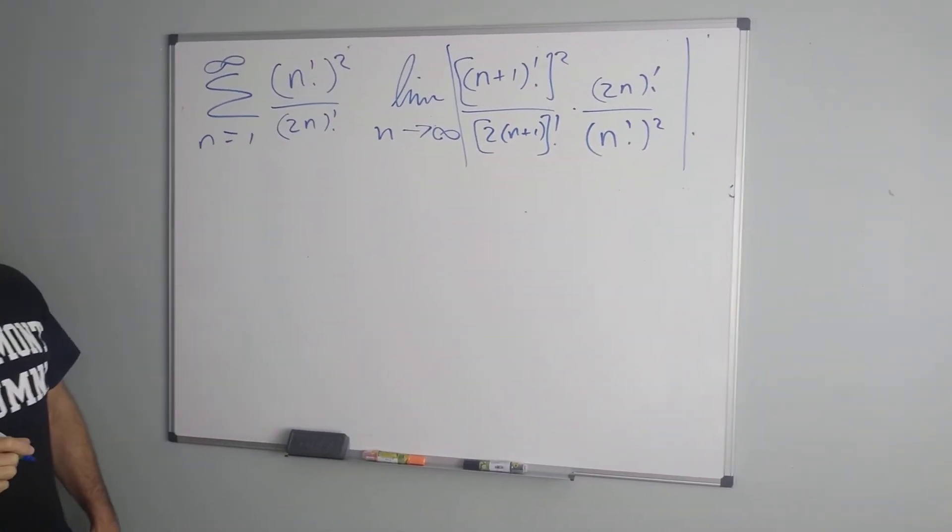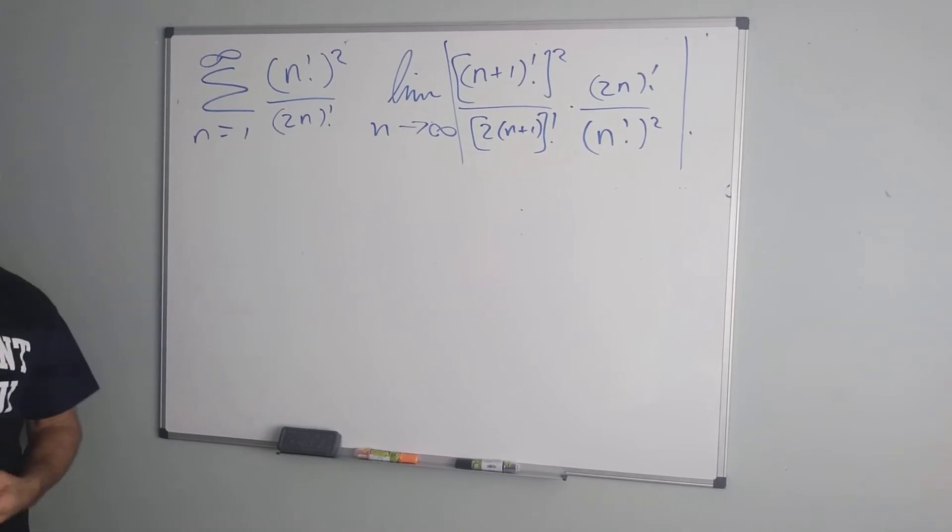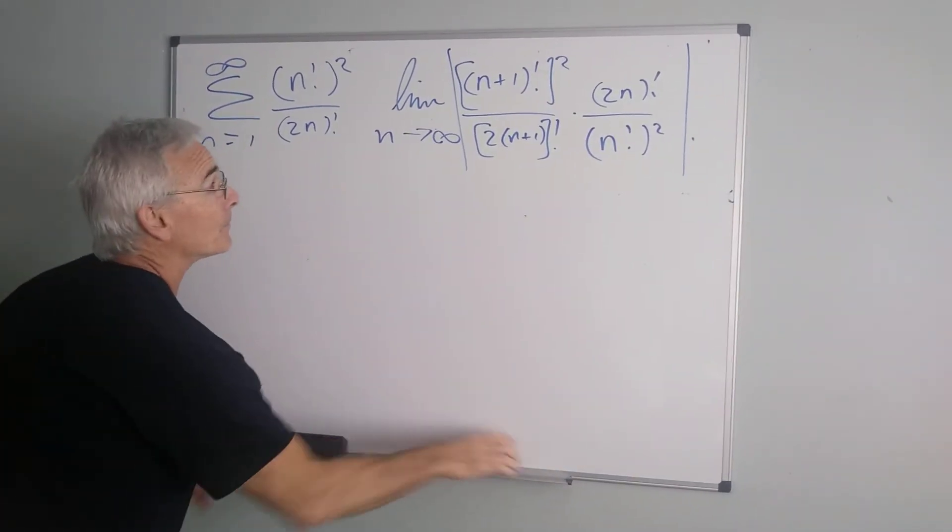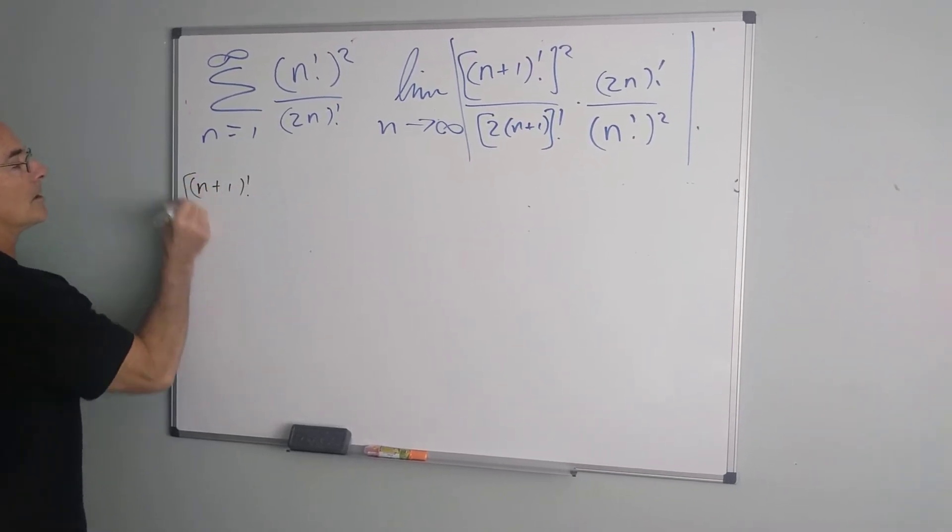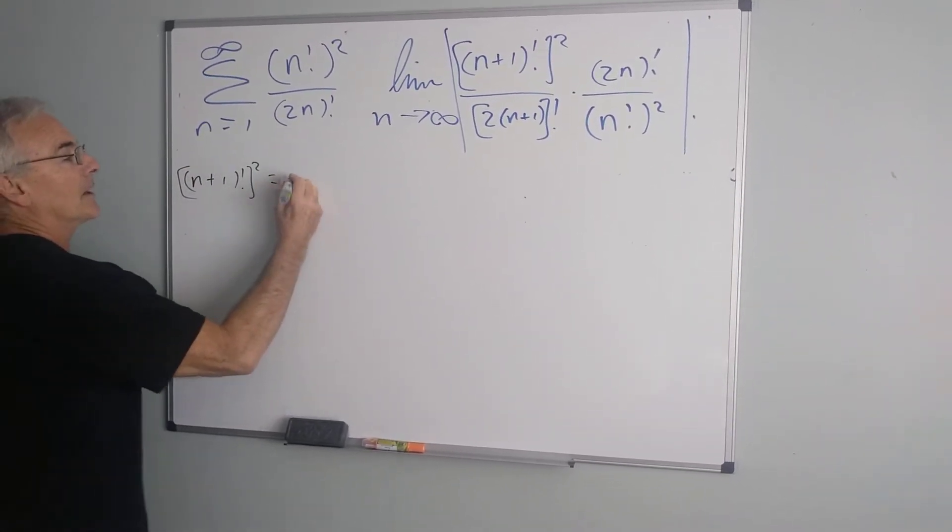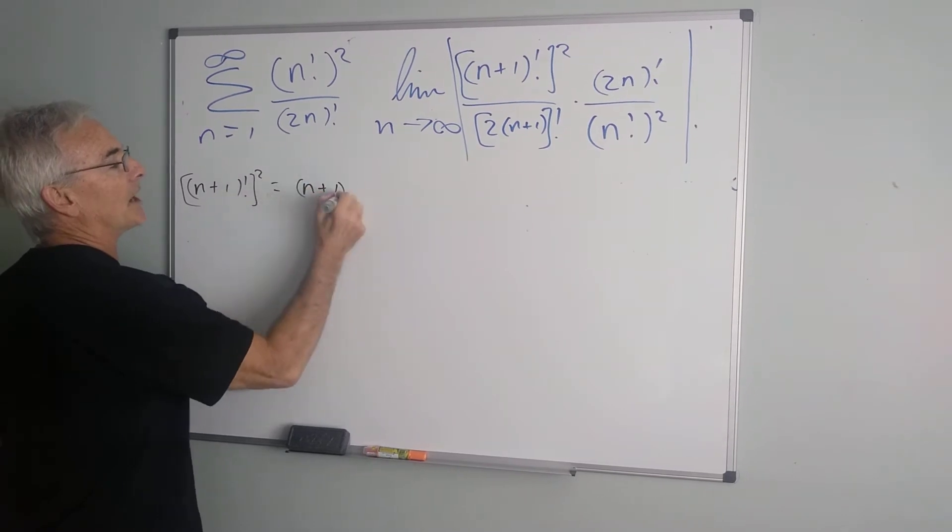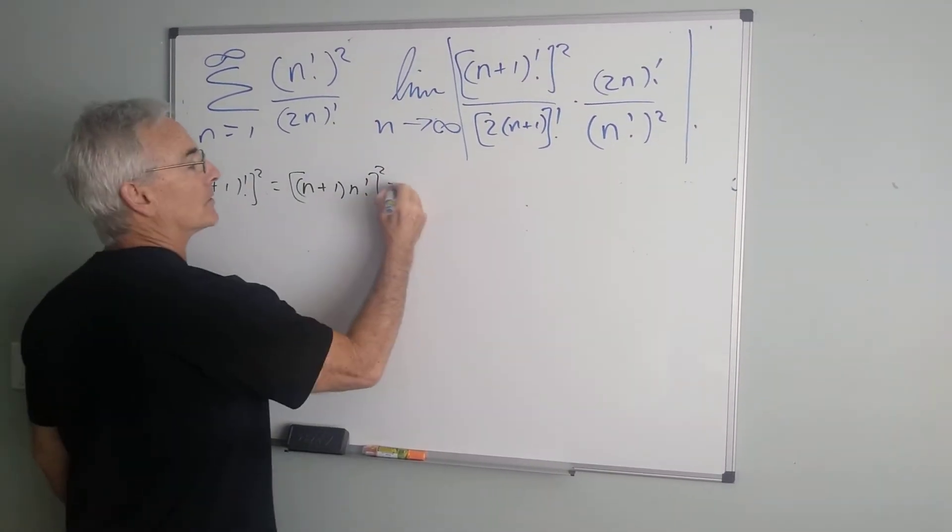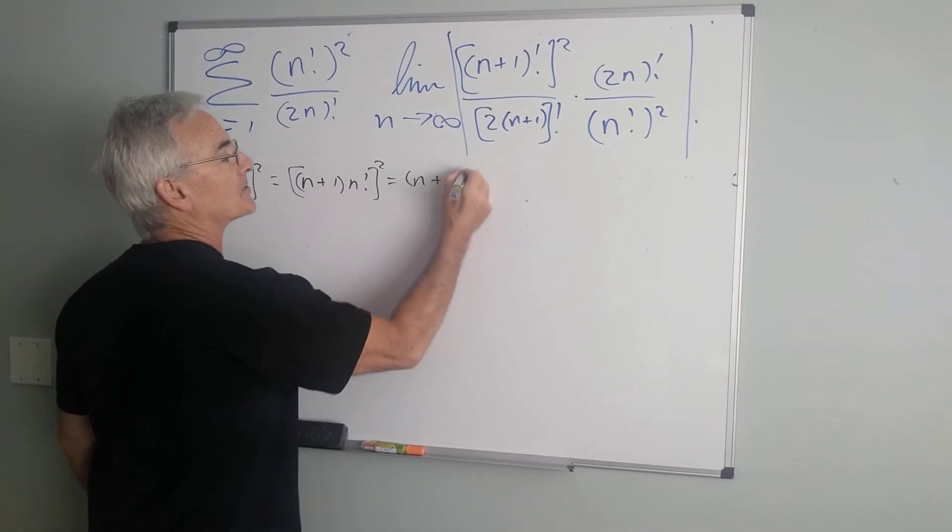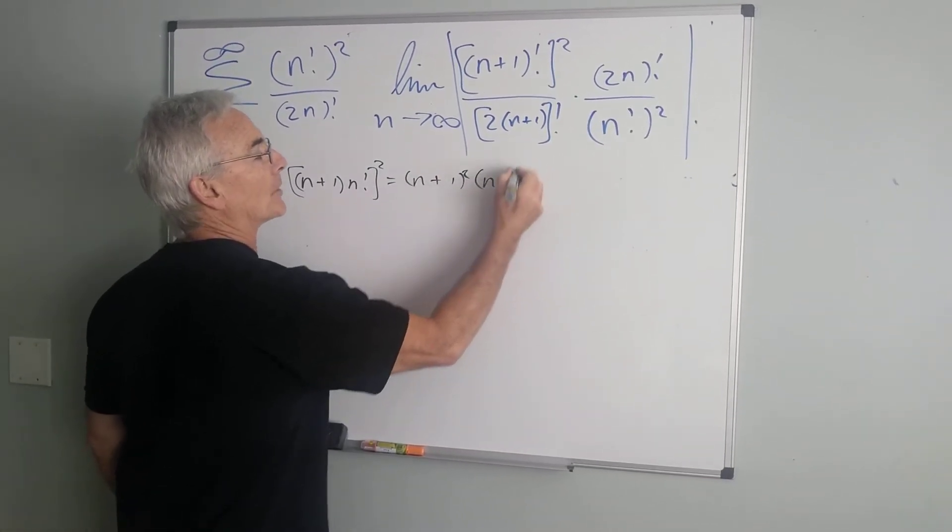Now, this quantity here looks kind of scary, so we need to expand the terms really one at a time. So, if I take the n plus 1 factorial squared, I know that's n plus 1 times n factorial, quantity squared, which would be n plus 1 squared, n factorial squared.